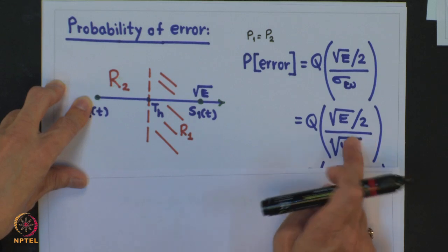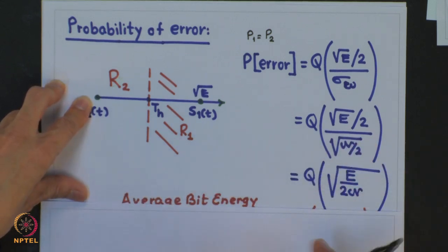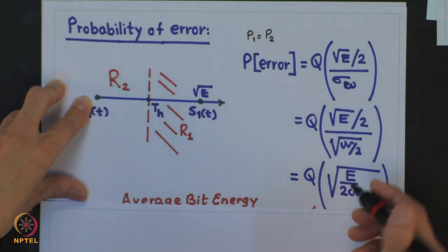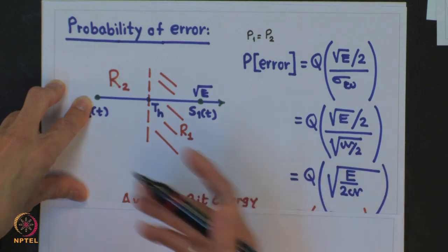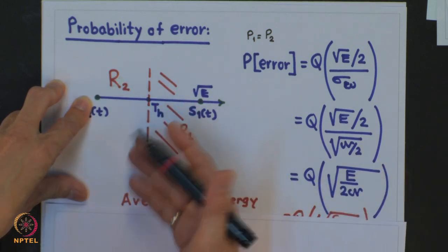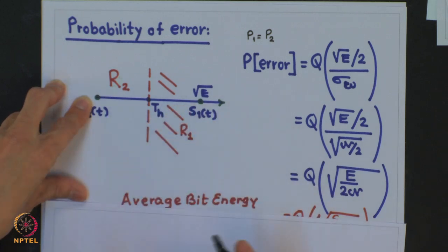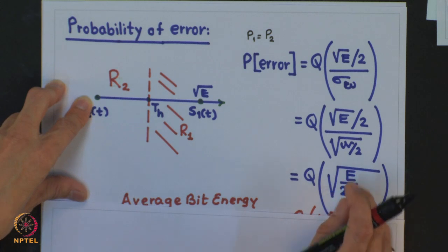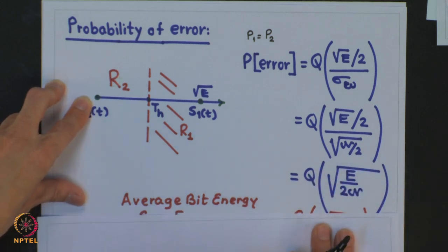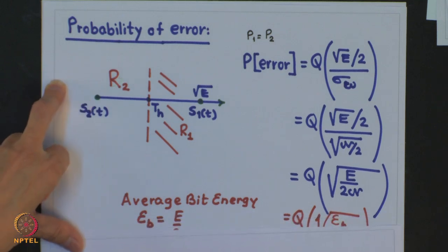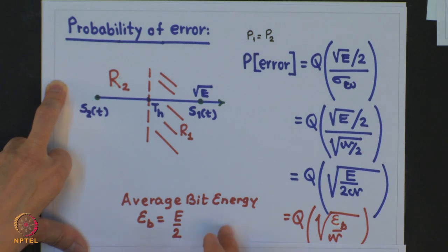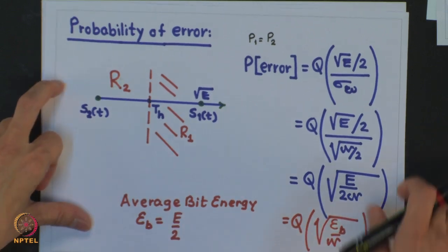It is more logical to express this ratio in terms of average bit energy, especially when we move to higher constellations with more than 2 signals. In our case the average bit energy equals E/2, because the probability of sending 0 is half, probability of sending 1 is half, S2 has 0 energy, and S1 has E energy. So the average bit energy turns out to be E/2, and plugging this in we get the final expression.